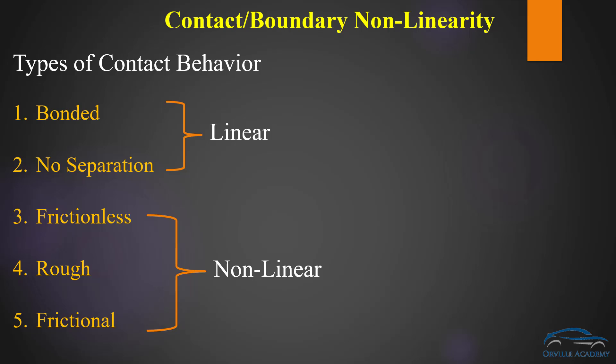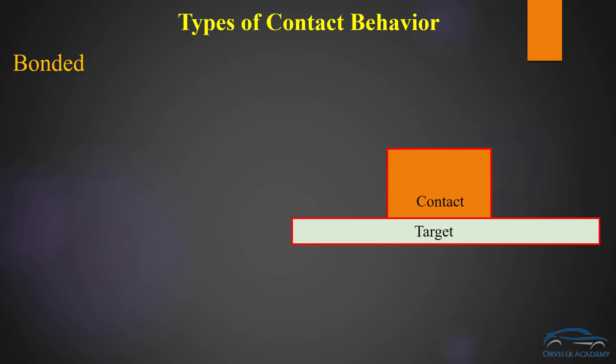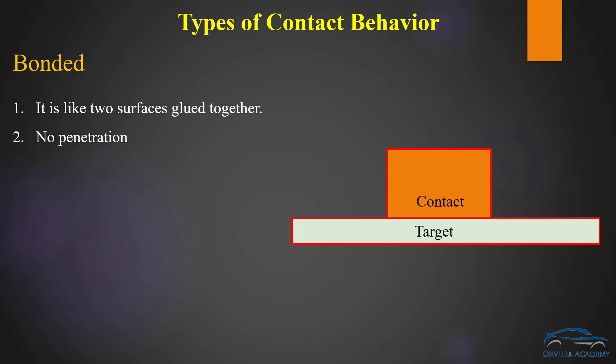We will see why they are called linear and nonlinear shortly. To understand the exact difference between these contact types, let us start with bonded contact. If we have bonded contact then the two surfaces will behave as if they are glued together. For any type of contact we make the distinction based on 3 factors: penetration, separation, and sliding. In case of bonded contact there is no penetration allowed between the contact and the target, and no separation allowed between contact and target.